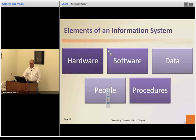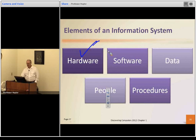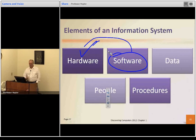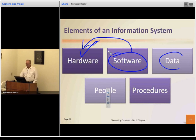Hardware is the stuff you can touch, feel, and pick up. Software is the other stuff — the programs and drivers — and software makes the hardware work. Without software, the hardware is just a doorstop. The data is what we want to have in the computer so we can do something with it.